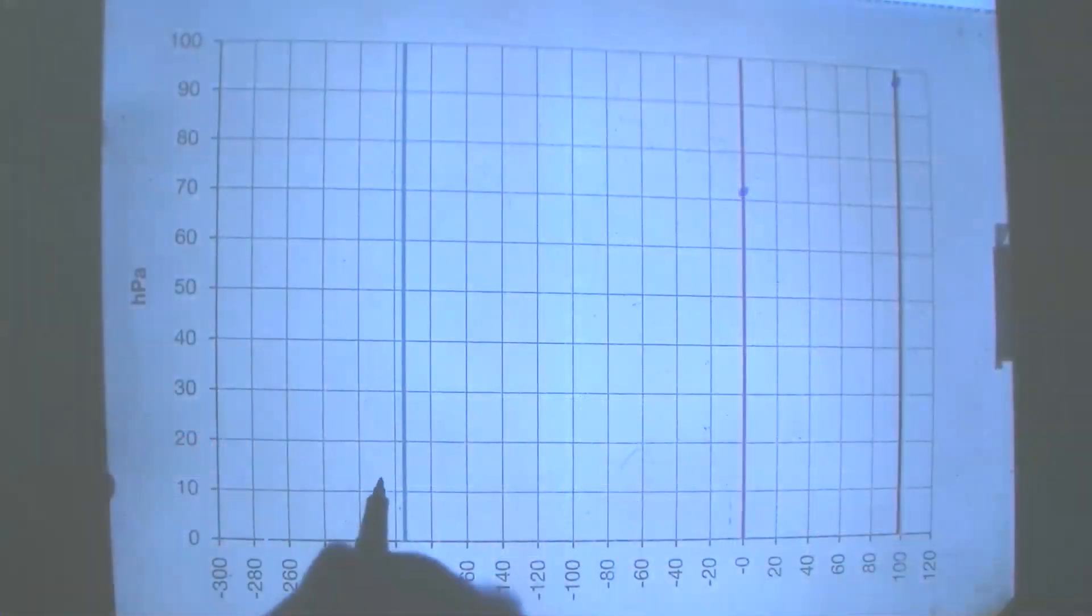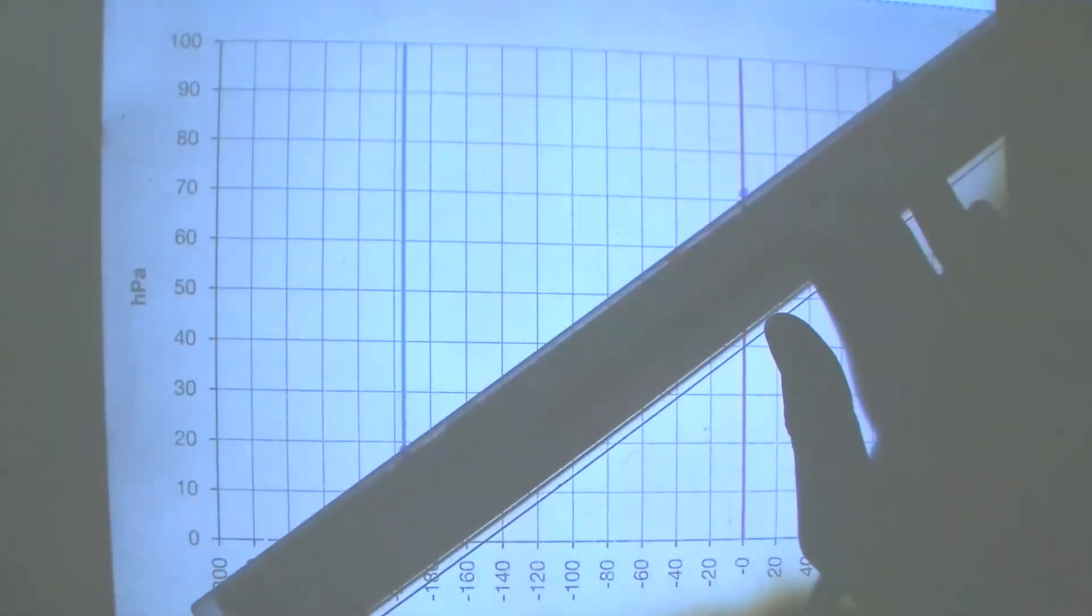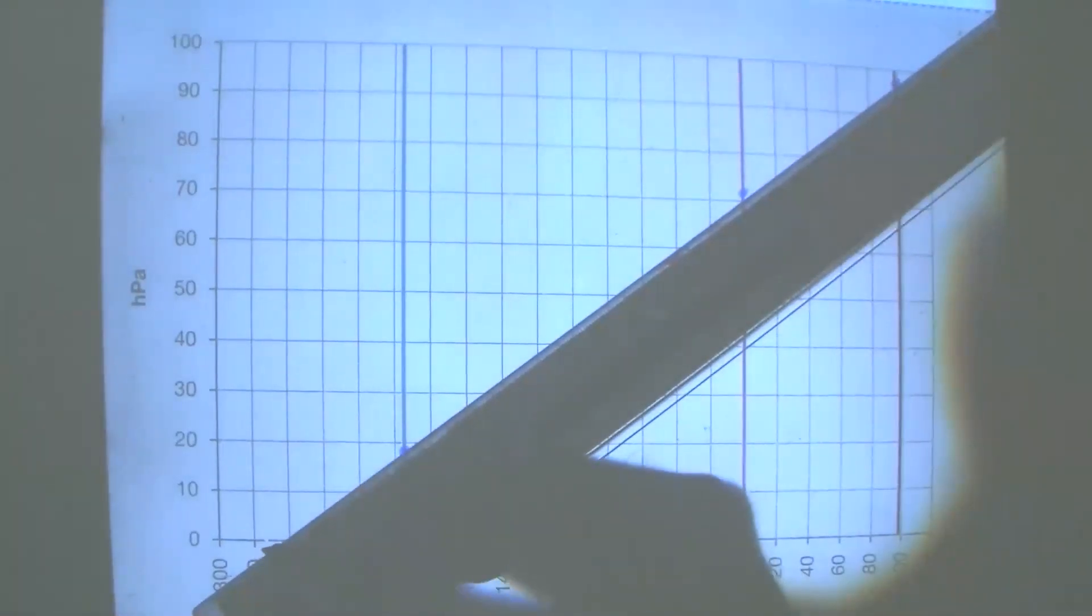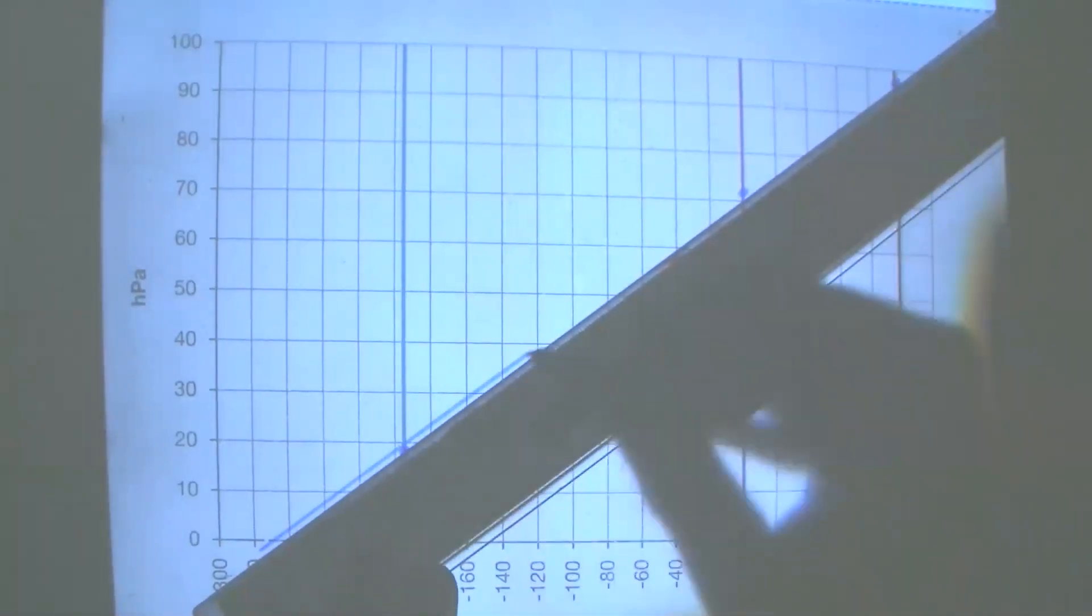And that gives us a third point for our plot in which we plot the pressure in the container versus the temperature of the surrounding environment. Now we can connect these three points and extrapolate them to zero.